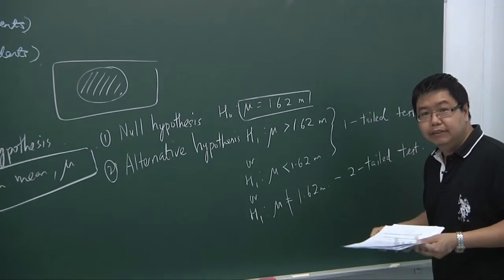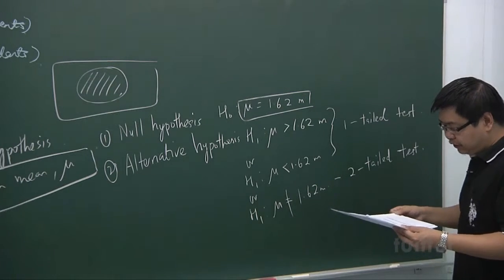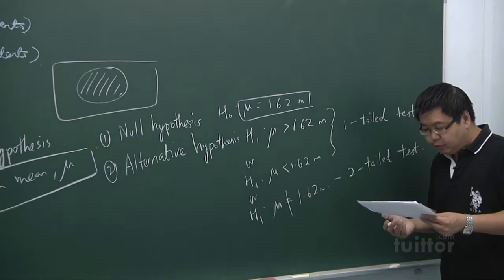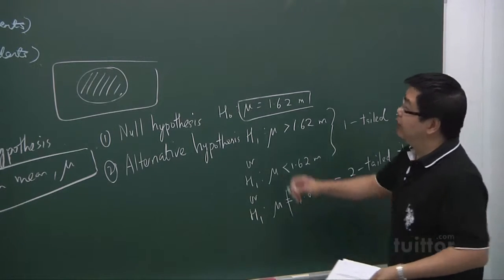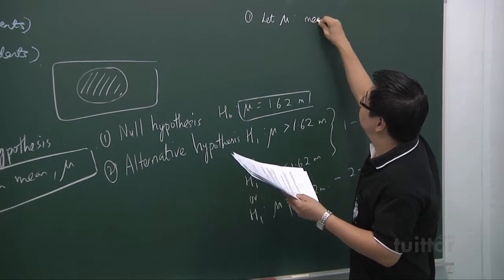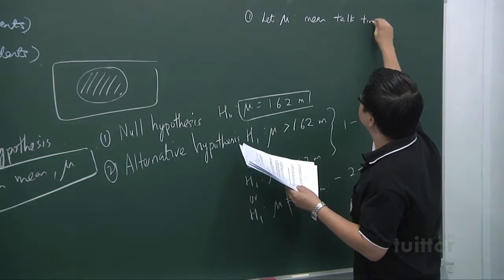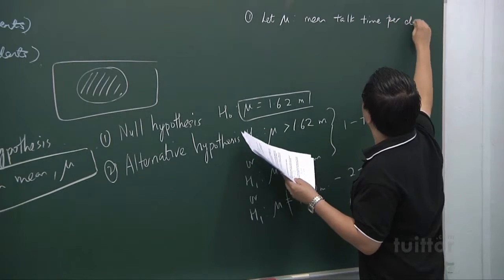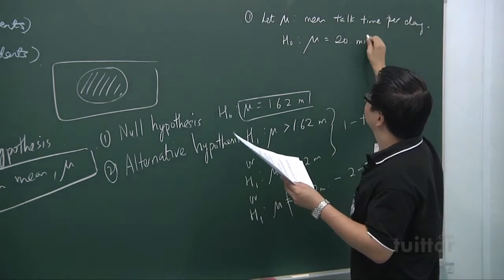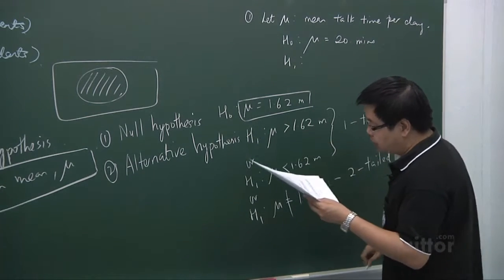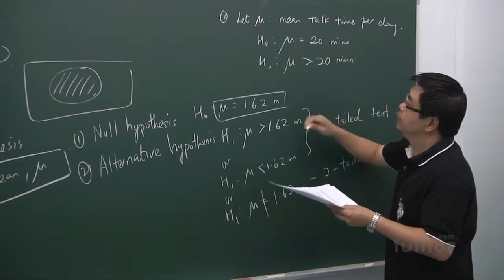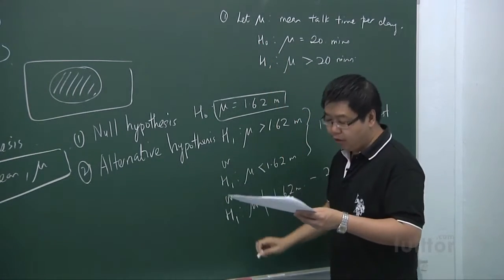Let's look at some examples from your handouts. Kelly claimed that the average number of screen time used by phone users in Singapore is 20 minutes per day. Test whether this value is underestimated. We let mu be the mean screen time per day. So the null hypothesis is H0: mu equals 20 minutes, and H1: mu greater than 20 minutes, because we are testing whether this value is underestimated.